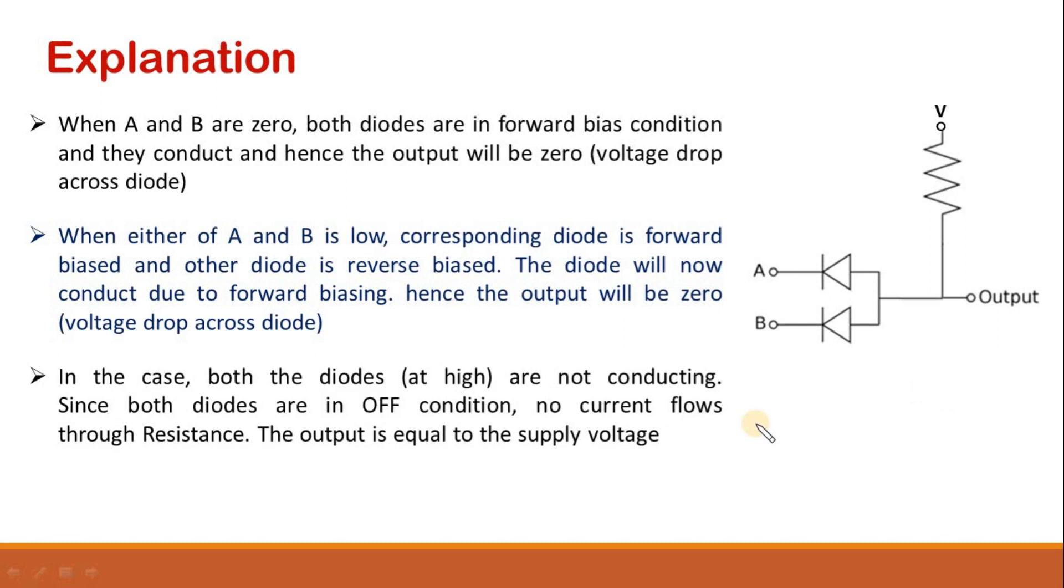In the case when both diodes are connected to high voltage, in that scenario both diodes will not conduct. Since both diodes are in off condition, there is no flow of current through the resistance. In that scenario, output voltage is equal to the supply voltage. Thus output voltage will be high when the inputs A and B are high.